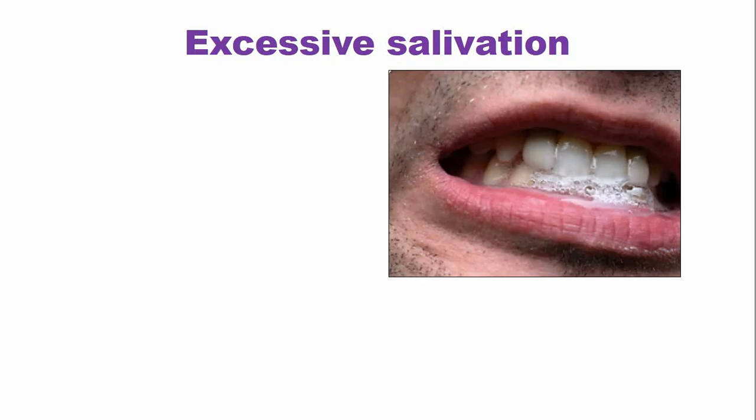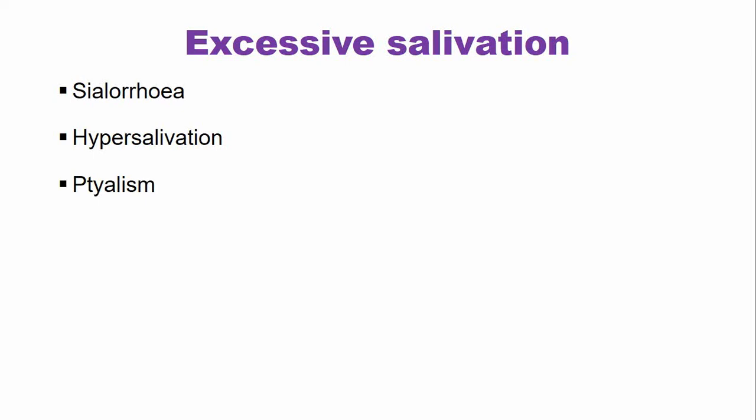Excessive salivation is a very uncommon pathology associated with the salivary gland. It is also referred to in the literature as sialorrhea, hypersalivation, or ptyalism — these are the alternative terms used to discuss excessive salivation. This problem is either a transient problem, occurring for some time, or it is a chronic, long-lasting problem.